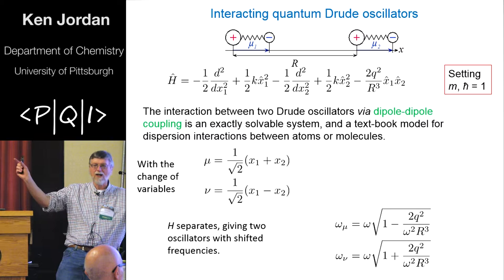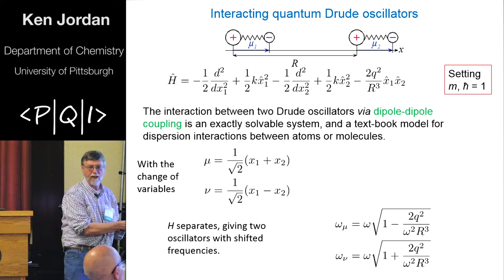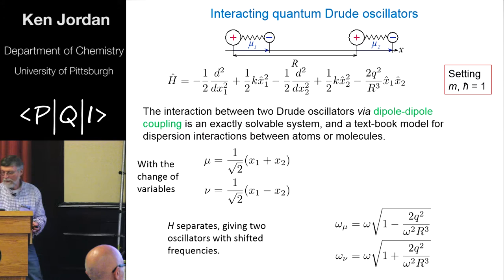So this immediately conveys the idea that the interaction energy is caused by the change in the zero-point energy. So you have two non-interacting oscillators. That would have the zero-point energy, which is given by omega. You allow them to interact. You'll get a change in the zero-point energy.